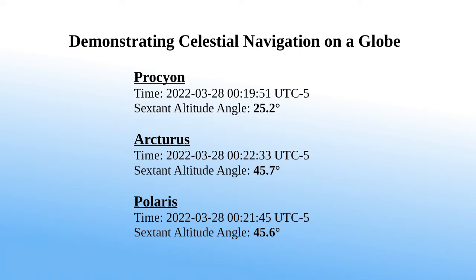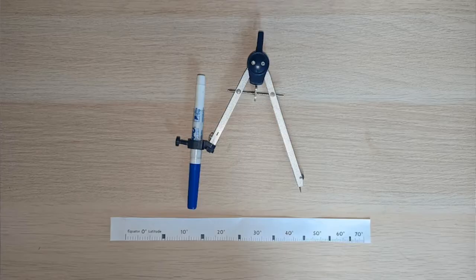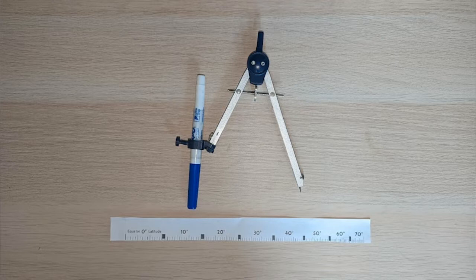In this video I will be demonstrating the principles underlying celestial navigation, specifically how circles of equal altitude intersect at the viewer's position showing their latitude and longitude coordinates. To do that I will be using an educational globe that you can draw on with dry erase marker, a drafting compass with dry erase marker attached, and a ruler-like scale to determine degrees of longitude at various latitudes on the globe. So let's begin.